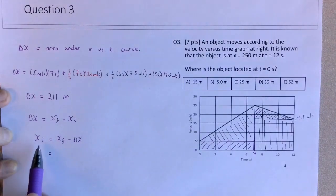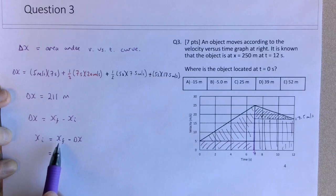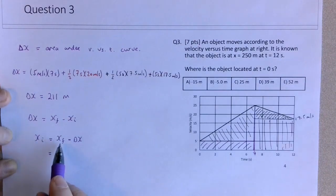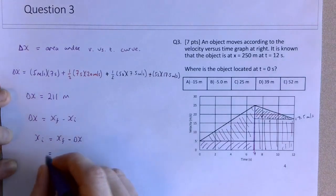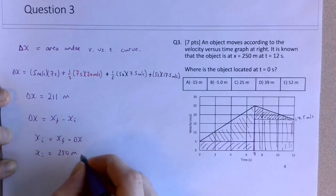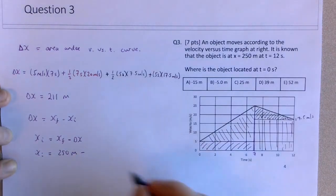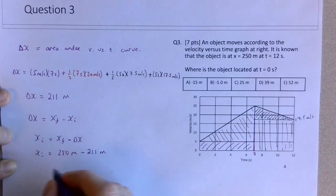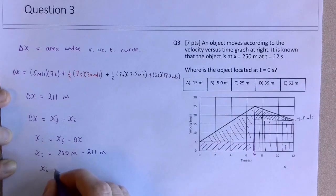So we're looking for the initial position where x final represents the position at 12 seconds. I'm trying to find where the initial position was at 0 seconds, because this delta x represented the delta x over that entire 12 seconds. So its final position is 250 meters, and we're subtracting the change in that position, 211 meters. So the initial position at time 0 is going to be 39 meters.